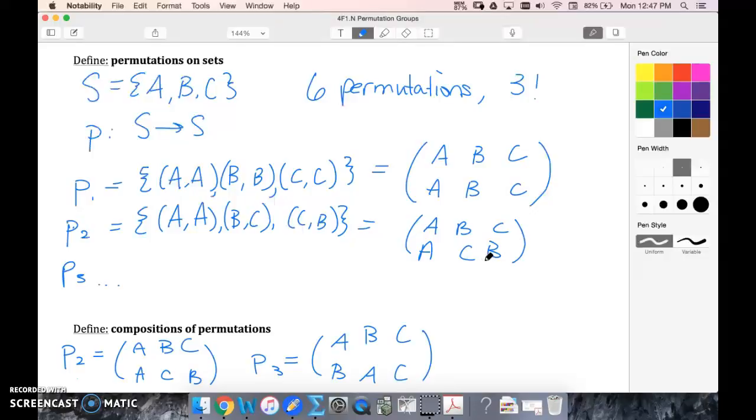We would switch the rows, and then we'd rearrange this to be in order, and that would turn into our inverse. So let's say P2 inverse. We're going to switch them around, and then I'm going to reorder them. So ABC, this is my top row now. Matching to A is A, matching to C is B, matching to B is C.